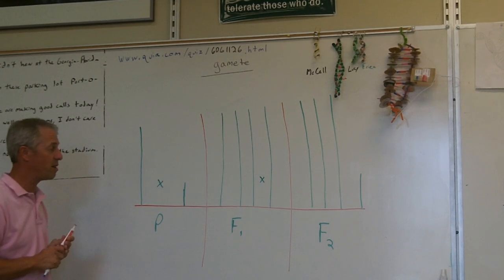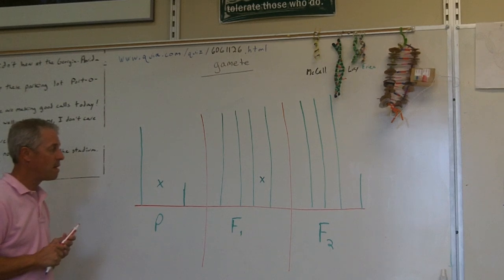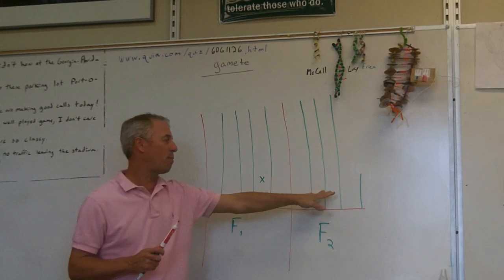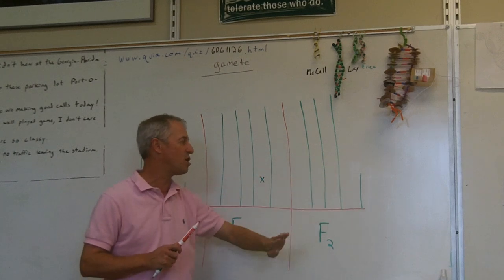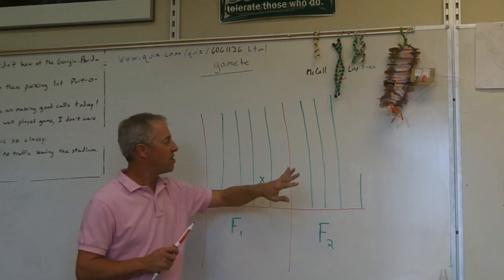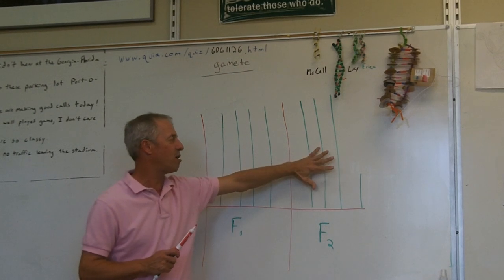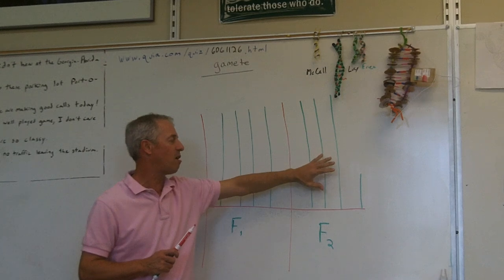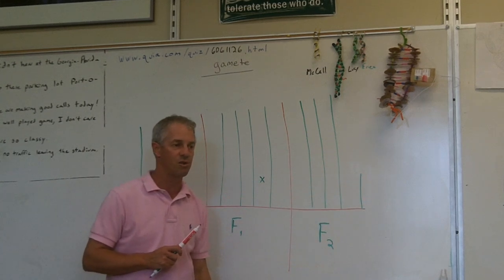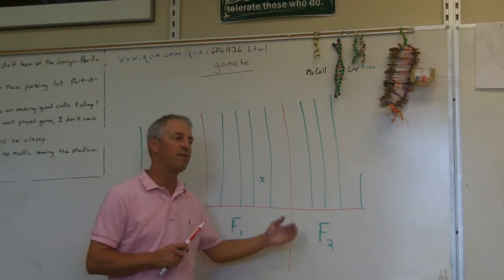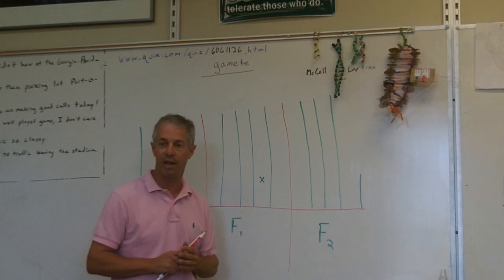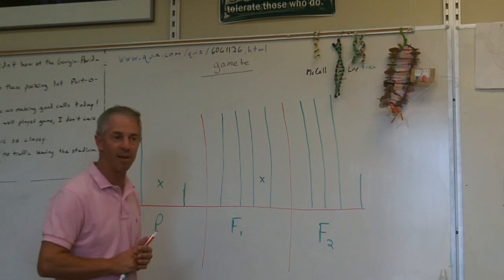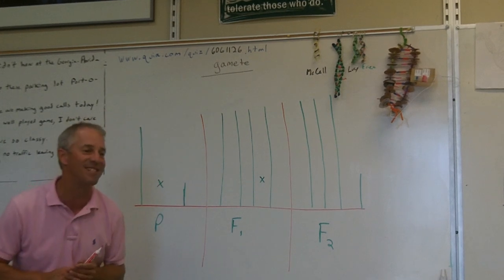He didn't just grow four plants. He saw it was in a three-to-one ratio. His total plants were like 750 talls and 250 shorts — that's a three-to-one ratio. He grew a lot of plants. They were eating a lot of peas at the monastery.